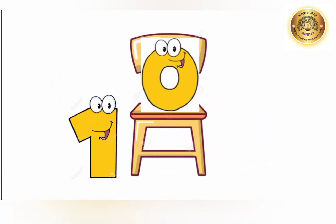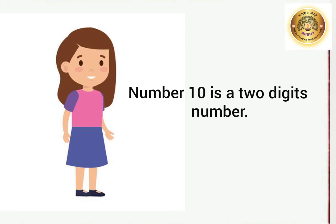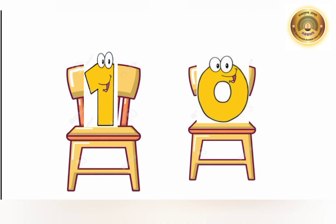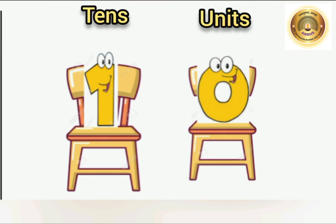Everyone started laughing. Ha ha ha! Then, Bittu's sister came and said, 'Bittu, number 10 is a two-digit number, so it cannot sit in one chair.' Then she gave two chairs to them. Each chair has a name — this is the units chair and this is the tens chair. U for units and T for tens. Now they could sit properly and they were happy.